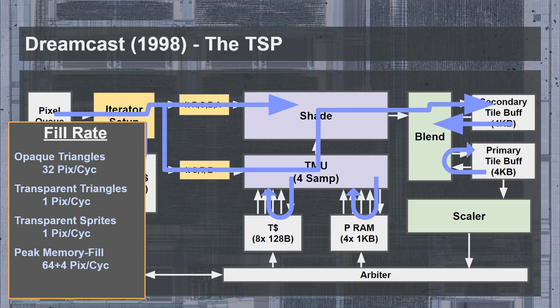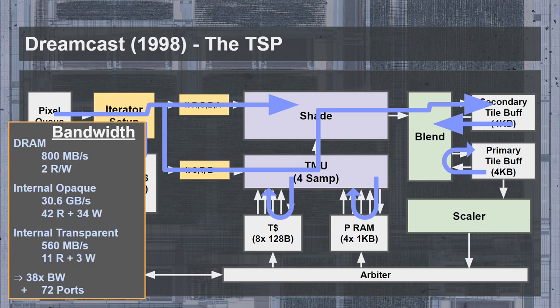The peak memory fill rate with the tile buffer is 64 pixels per cycle for the depth buffer and 4 pixels per cycle with the color buffers — not an issue with this architecture since it was specifically designed around that constraint. The VRAM bandwidth could also support a 2 pixel per cycle fill rate, sufficient to keep up with the 1 pixel per cycle shading rate. The VRAM was capable of 800 MB per second across two read-write ports due to dual-channel configuration. Internal memory bandwidth when drawing opaque triangles was effectively 30.6 GB per second across 42 read and 34 write ports, largely dominated by the micro-depth buffers. When drawing transparent triangles, the internal bandwidth drops to 560 MB per second across 11 read and 3 write ports.